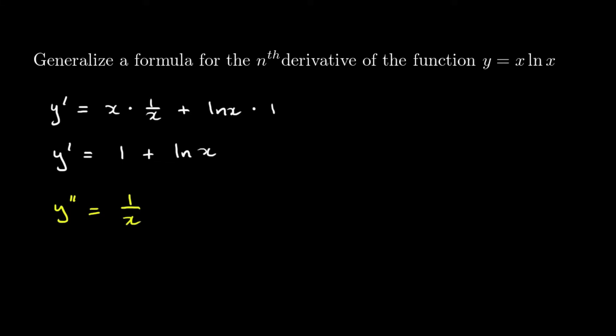Okay on to our third derivative. Before we do that it would probably be wise to write that as a power function. So of course that's x to the minus 1 and that makes our third derivative a lot easier. It's going to be minus x to the power of negative 2. I'll go back and write this as a rational. So that's the same as minus 1 over x squared.